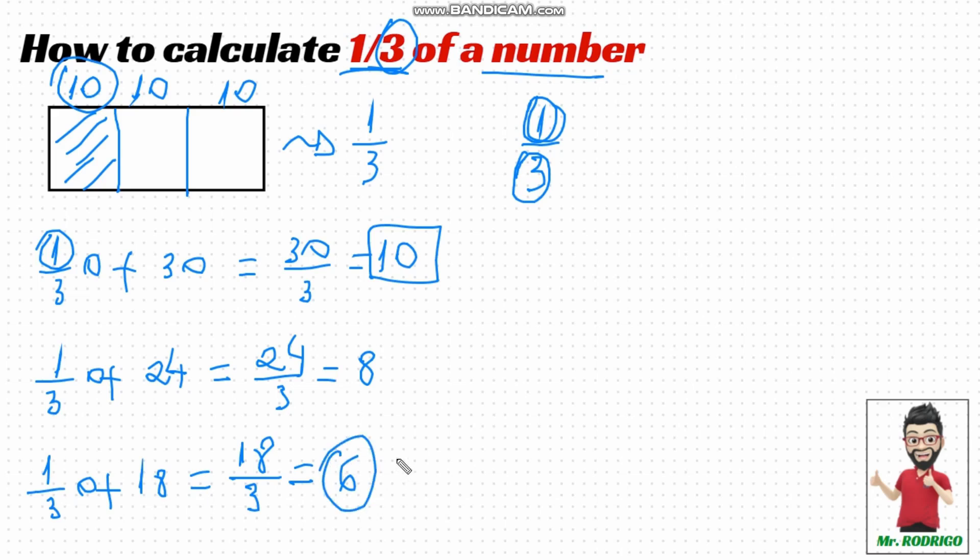If we were to make a geometric representation of one-third of 18, it would be like this. We divide 18 into three equal parts and take just one of those parts. Since here 18 divided by 3 equals 6, each of these parts is worth 6, and I only want one of them. So, one-third of 18 is 6.